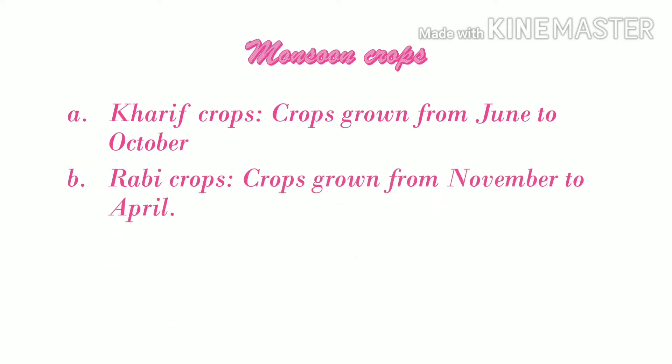Monsoon crops. Kharif crops are the crops which are sown at the beginning of the rainy season, i.e., between April and May. Rabi crops are the crops that are sown at the end of the monsoon or at the beginning of the winter season, i.e., between September and October. These crops are generally known as the monsoon crops. Examples of Kharif crops are maize, rice, groundnut, pulses, and millets.